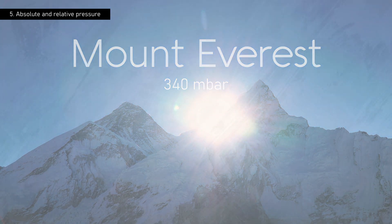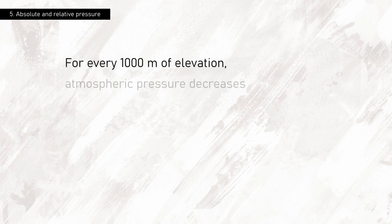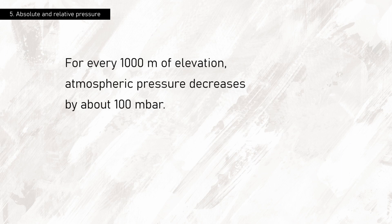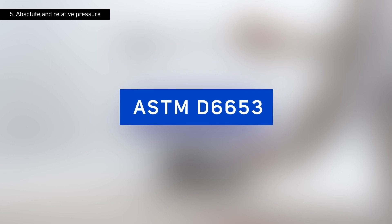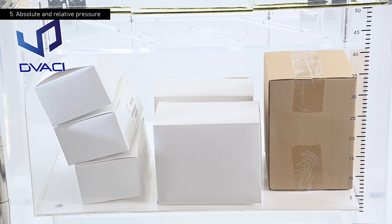To contextualize this phenomenon, consider that for every 1,000 meters of elevation, atmospheric pressure decreases by about 100 millibars. This principle is fundamental in the ASTM D6653 standard, used in transport simulation experiments and industrial quality control processes.